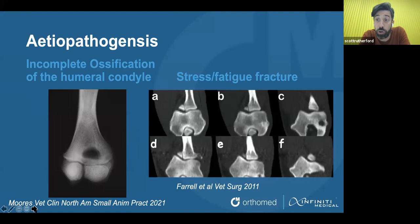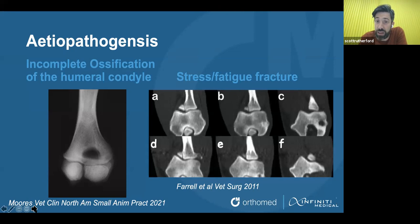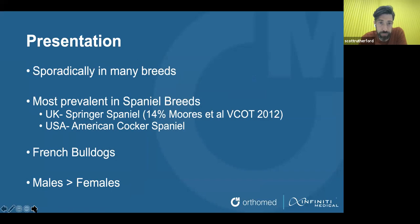There has been a hypothesis that other elbow pathology can contribute, such as incongruence as seen in dogs with medial coronary disease. This was proposed by Andy Moores, who found a large number of Springer Spaniels with both medial coronary disease and humeral intracondylar fissure. It's proposed that the abnormal forces may have contributed to initiating this stress fatigue fracture.